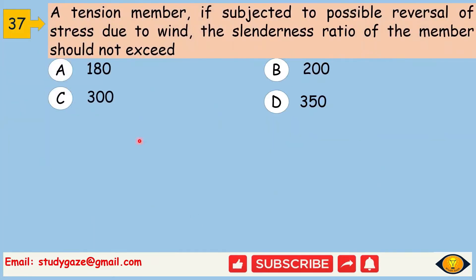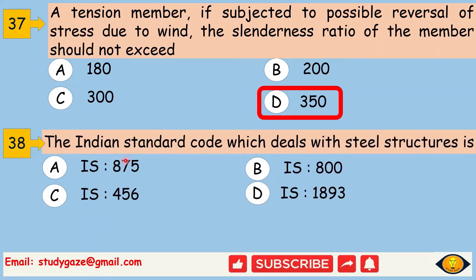The tension member, if subjected to possible reversal of stress due to wind, the slenderness ratio of the member should not exceed 350. Next, the Indian standard code which deals with steel structure is IS 800.